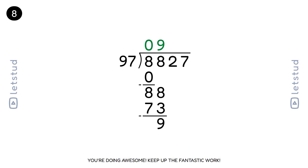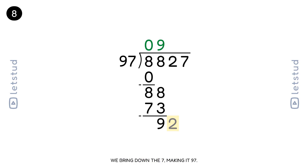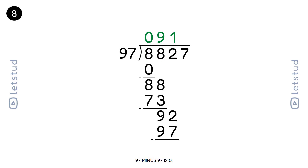You're doing awesome, keep up the fantastic work. Let's bring down the last digit, 7, making it 97. 97 fits into 97 one time. 97 times 1 is 97. 97 minus 97 is 0.